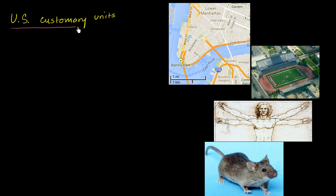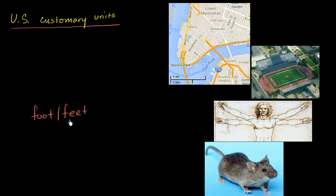Let's talk about US customary units for distance. At a human scale, the most typically used unit in the US customary system would be the foot. The term foot — and if you have many of them, feet — comes from the same word as the human body part. Not everyone's feet are the same length, but the length of a foot is roughly a little bit larger than most people's feet, and there are definitely people whose feet are exactly the size of a foot.